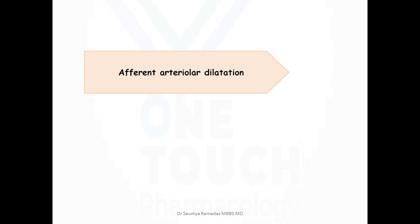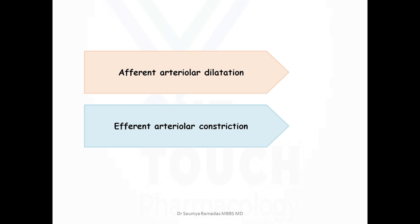Before going into the mechanism of tubuloglomerular feedback, understand that dilatation of the afferent arteriole and constriction of the efferent arteriole would increase the glomerular filtration rate, and vice versa. That means efferent arteriolar constriction and afferent arteriolar dilatation would decrease the glomerular filtration rate.